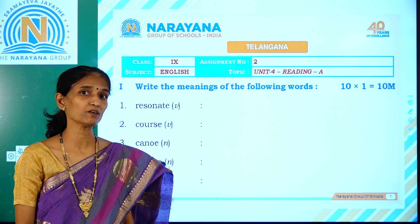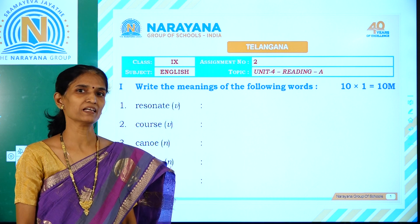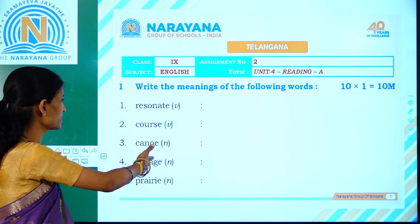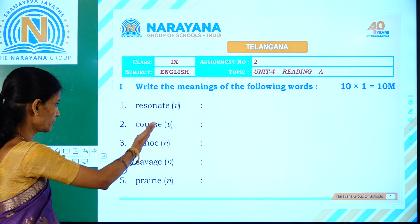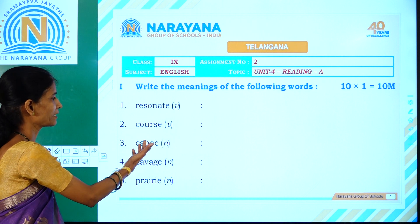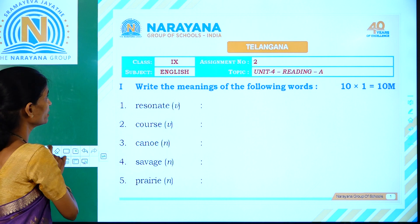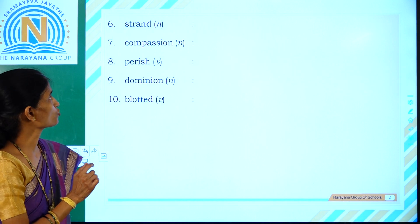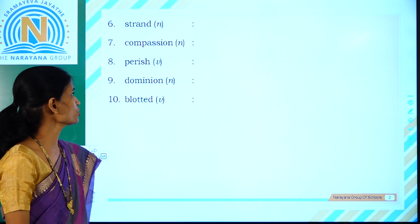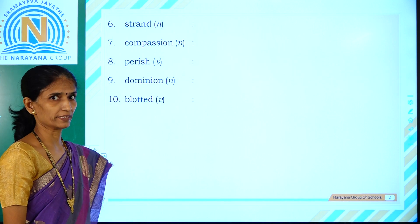We are given 10 words for which meanings are to be written. The ten words are: resonate, coarse, canoe, savage, prairie, strength, compassion, perish, dominion, and blotting.